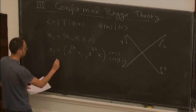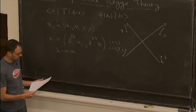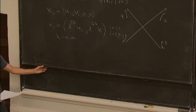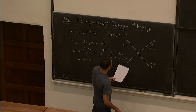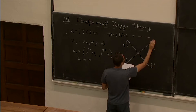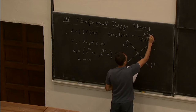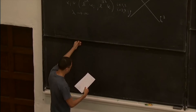The Regge limit corresponds to taking this boost very large. That is the natural definition of the Regge limit for a four-point function of local operators. David explained very well how to relate what this limit corresponds to in terms of cross ratios of the four-point function. I define this with the usual factor x₁₂² x₃₄² to the Δ_φ times a function of the cross ratios.